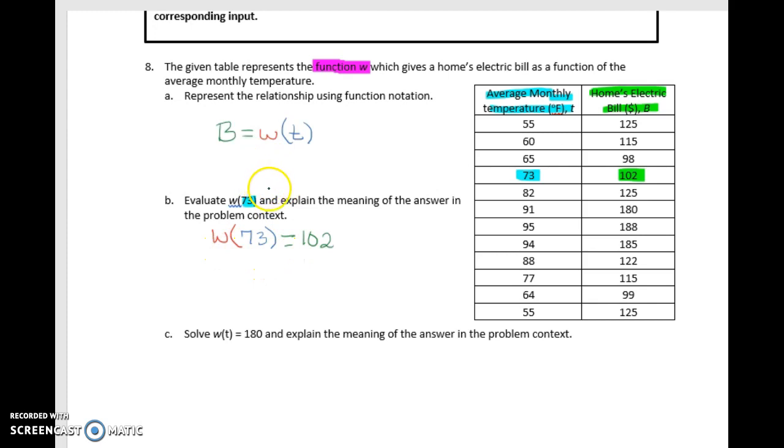The other way we can write it in the shortened version or the condensed version of the function notation, because remember, this output B also can be written as B of T. And we'll spend a lot more time working with the shortened version or the condensed version versus the expanded version, but this is going to come in handy later on. But we will be using also the shortened version. And so we could also answer this question by simply saying B of 73 equals 102.